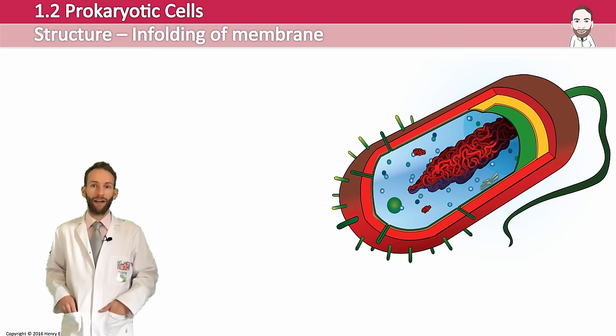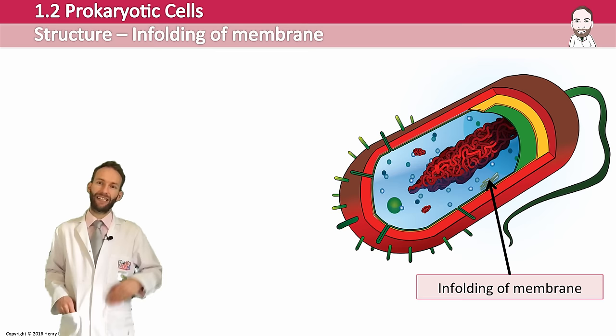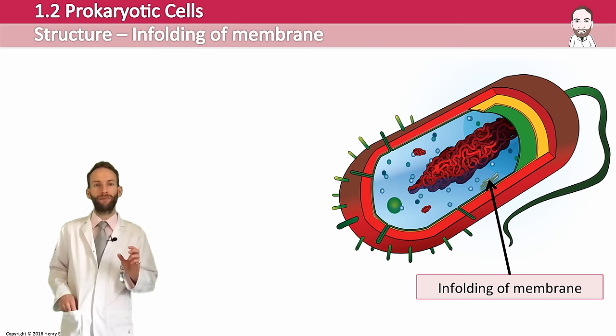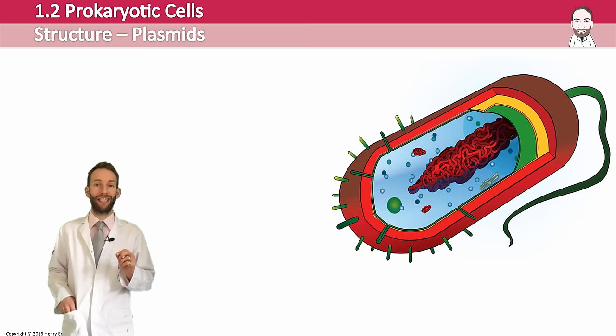In some prokaryotic cells, membranes fold inwards, which increases the surface area, probably for some kind of metabolic reaction. It was thought this was for respiration instead of mitochondria, since prokaryotic cells don't have any membrane-bound organelles, but now it's thought it might be more likely for photosynthesis in photosynthetic bacteria, or nitrogen fixation.